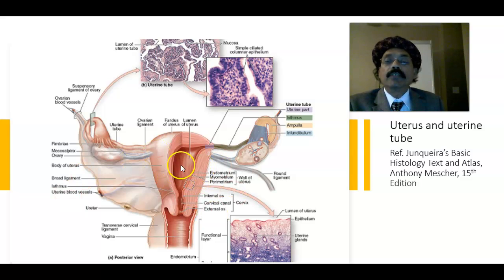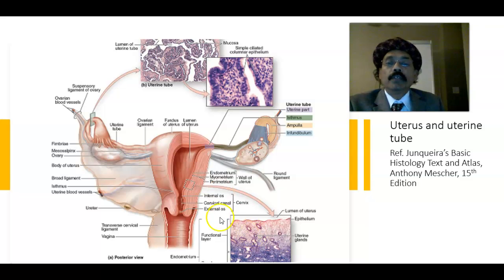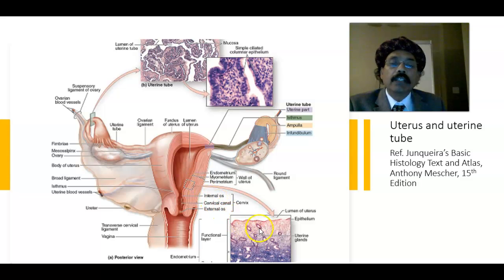This is the endometrial layer, this is the myometrial layer, and this is the perimetrial layer. If we highlight this endometrial layer, we will get this appearance.